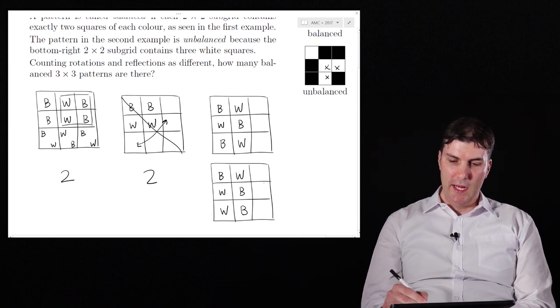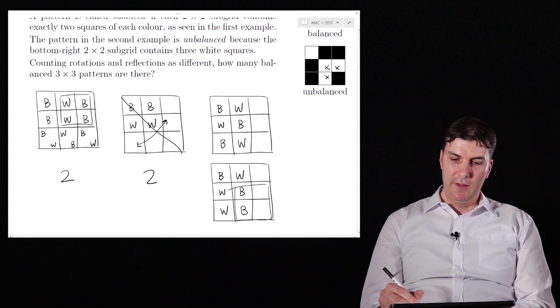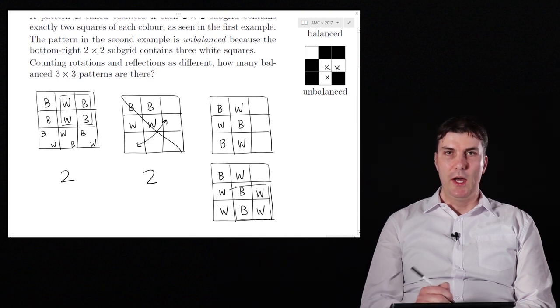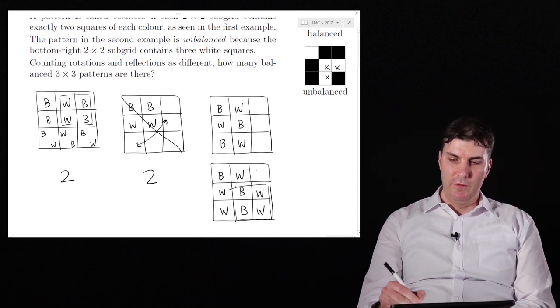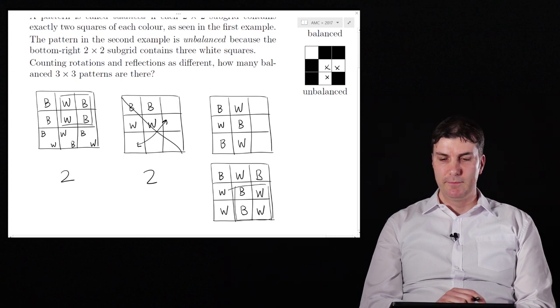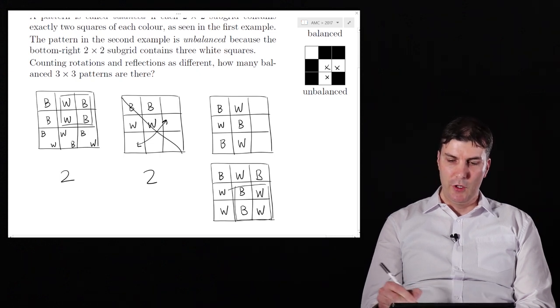This black black in the bottom right hand corner means that we must fill out that grid with a white and a white, and then we've really only got black to place in the top right and we're done. So there's one version of that.